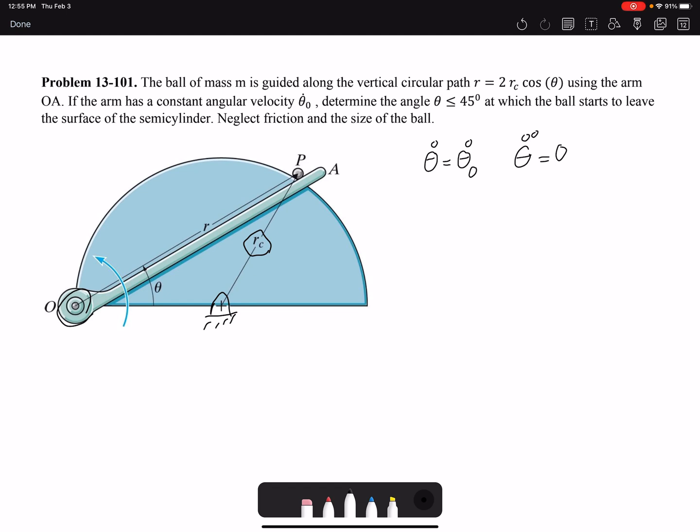Determine the angle, which would be less than 45 degrees, at which the ball starts to leave the surface. So whenever we hear leave the surface, that means there won't be any normal force, so we have to set the normal force to 0.